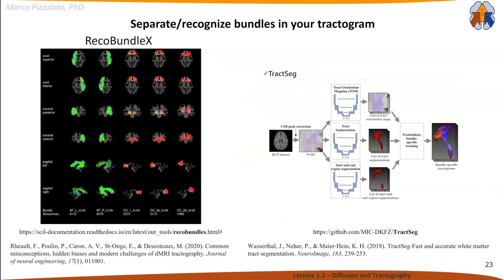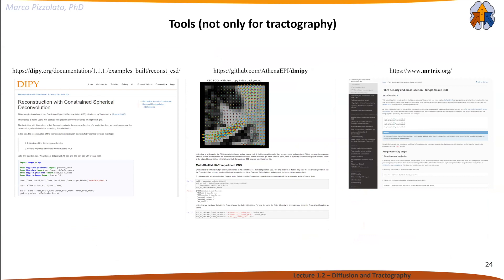You might want to separate and recognize different bundles anatomically. There are options for this. I leave you some references and tools that can be used, though there are more than these. I'm focusing on tractography, but you can do much more.